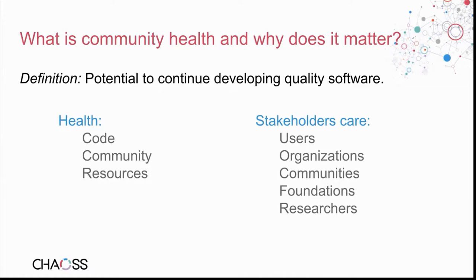This is a matter of concern for many stakeholders. Users of software don't want to be exposed to vulnerabilities like Heartbleed or Equifax, where hundreds of millions of records were exposed because of a vulnerability in open source software that wasn't fixed in time. Organizations care to minimize their risks but also to leverage their influence and have an assessment of how they're doing in communities.